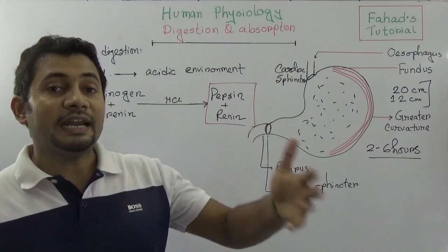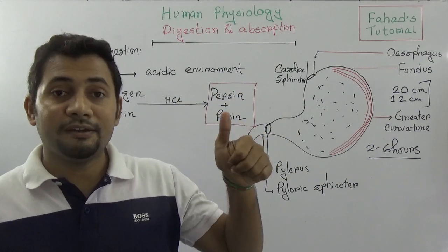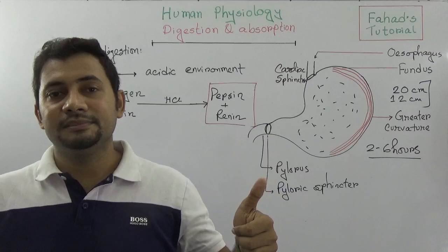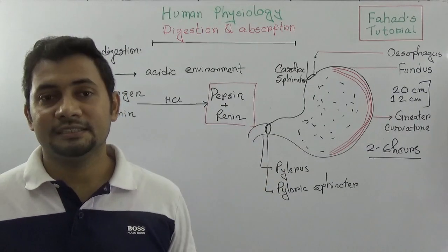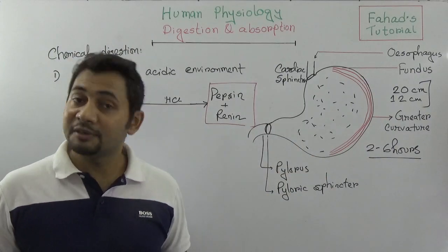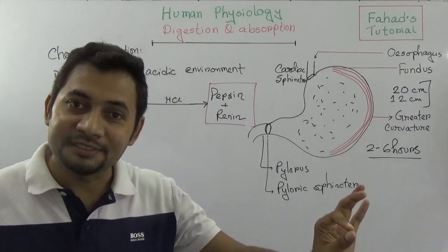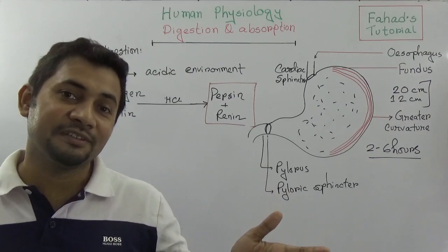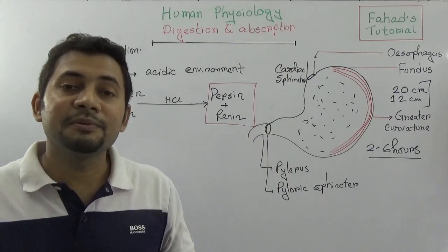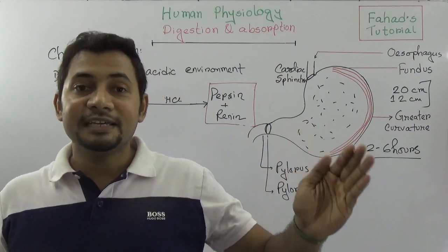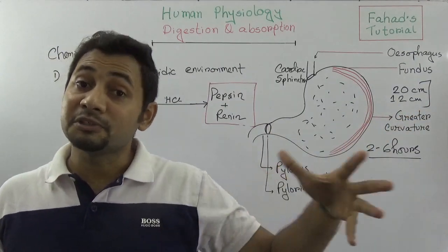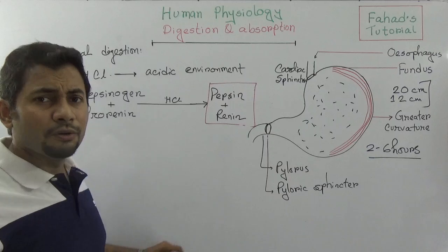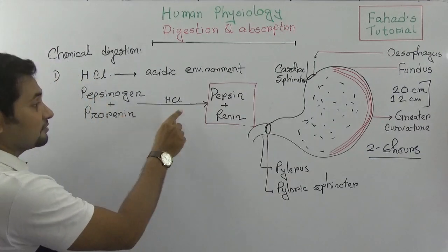In stomach digestion, we consider carbohydrates, proteins, and fats. There are no amylolytic enzymes present in the stomach, so there is no carbohydrate digestion here. However, there are proteolytic enzymes present. To recap: carbohydrates require amylolytic enzymes to become glucose, proteins require proteolytic enzymes, and lipids require lipolytic enzymes. In the stomach, only proteolytic enzymes — pepsin and renin — are present.